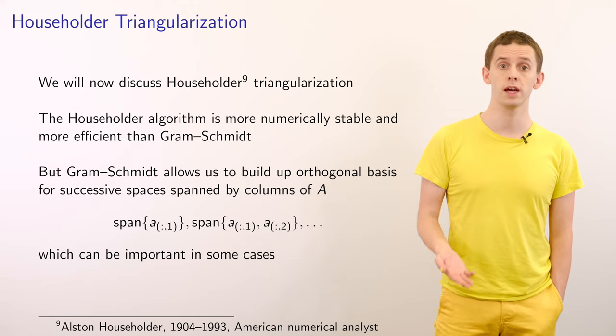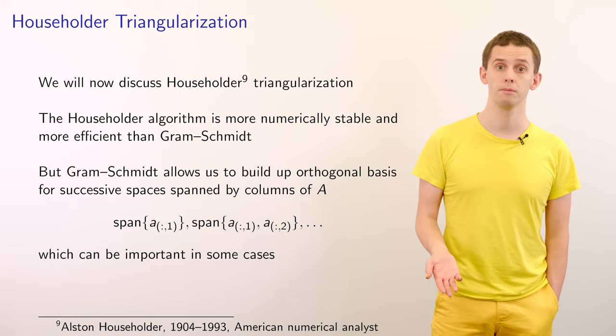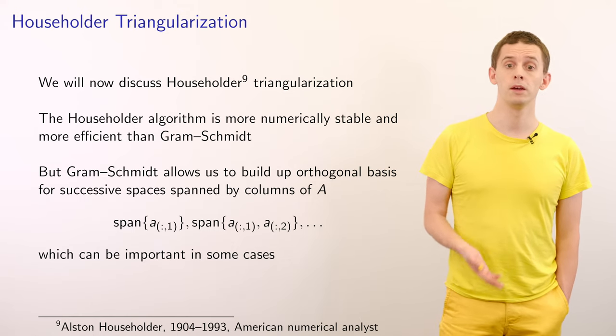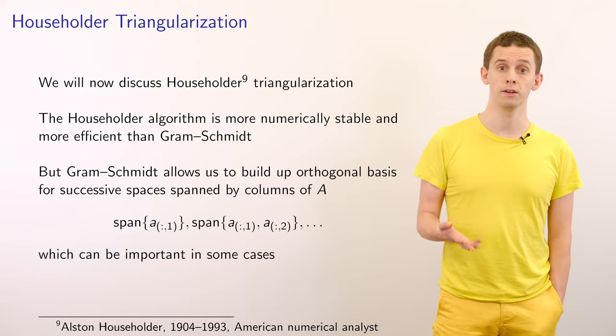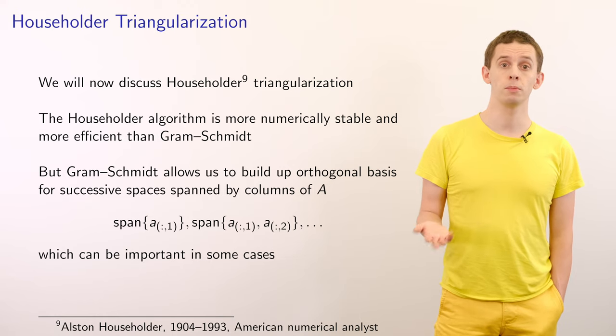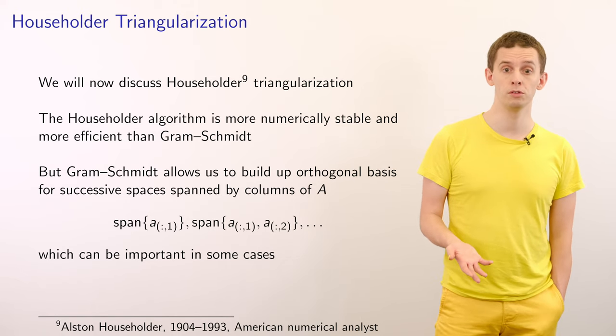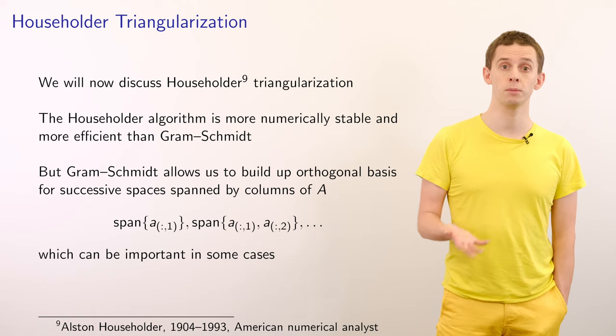The Householder method works by taking a matrix and applying a sequence of reflection matrices to it that convert it into upper triangular form, from which we can derive our QR factorization. The Householder algorithm is named after Alston Householder, an American numerical analyst who lived from 1904 to 1993. The Householder algorithm is actually more numerically stable and efficient than the Gram-Schmidt orthogonalization process. However, Gram-Schmidt has the additional benefit that we can build up our QR decomposition in terms of looking at the spaces spanned by successive columns of A.